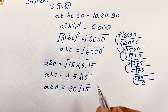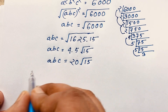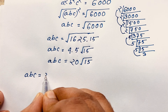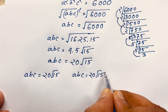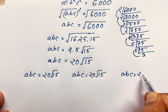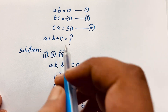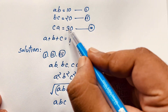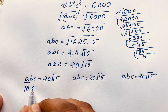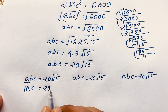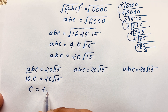We found ABC is equal to 20√15. Our target is A plus B plus C. Now, recalling that AB is equal to 10, I place that here: AB times C equals 20√15, so 10 times C equals 20√15. Dividing both sides by 10, we find C is equal to 2√15.